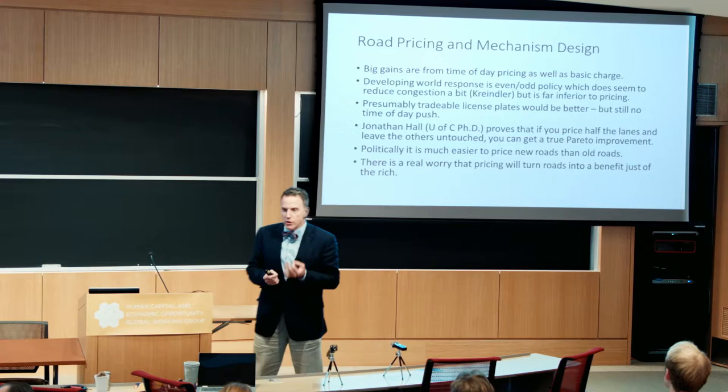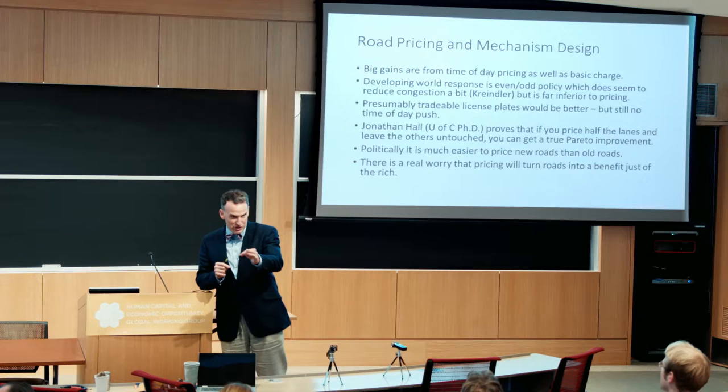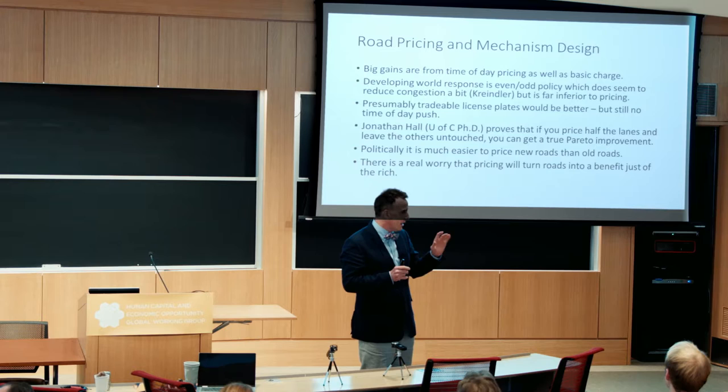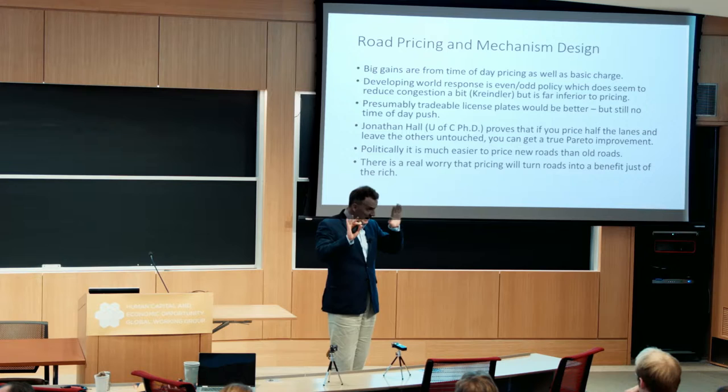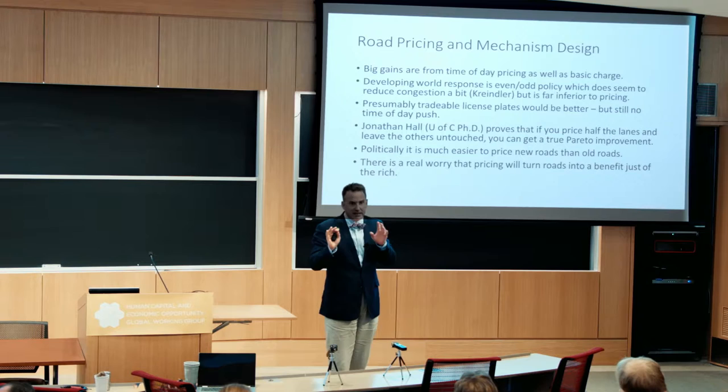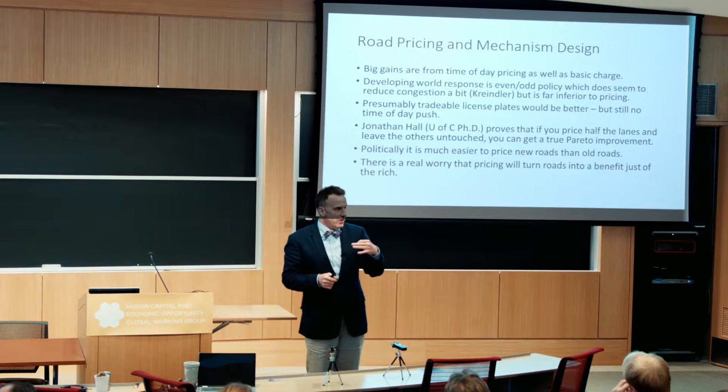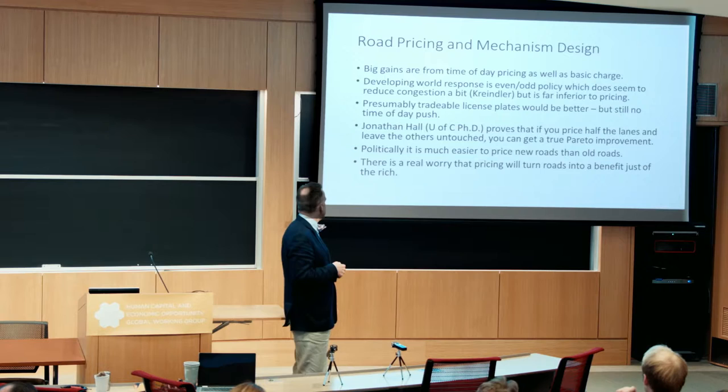This is an area in which we could really use more mechanism and market design. Jonathan Hall — a University of Chicago Ph.D. student — has a great paper showing you can actually do congestion pricing in a Pareto form by keeping half the roads open and making half the roads tolled, which is a very nice solution to this problem. In much of the developing world, they favor things like the even-odd scheme, where you can drive Tuesdays and Thursdays if your license plate is even, and Mondays and Wednesdays if it's odd. This is clearly wildly inefficient. Gabe Kreindler has a nice paper on this. There is a question of whether you could do it better with something more tradable.